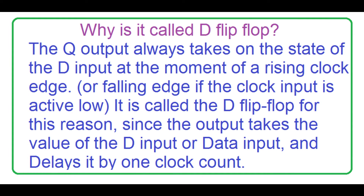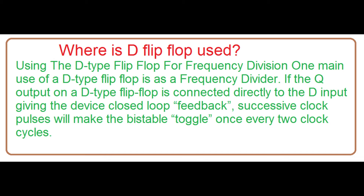Why is it called D flip-flop? The Q output always takes on the state of the D input at the moment of a rising clock edge, or falling edge if the clock input is active low. It is called the D flip-flop for this reason, since the output takes the value of the D input, or data input, and delays it by one clock count.